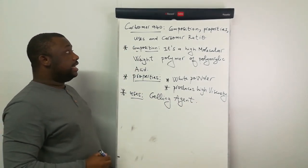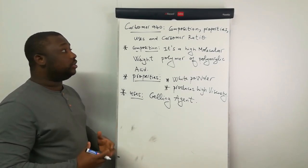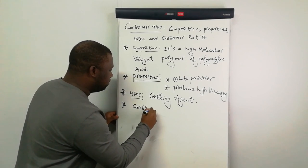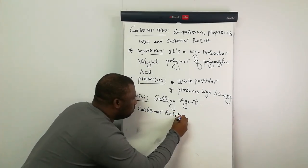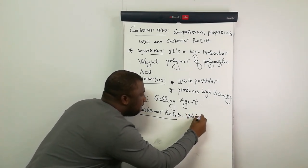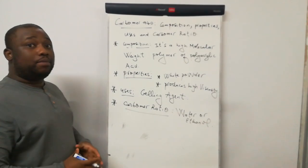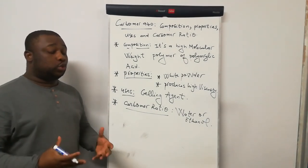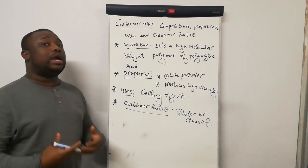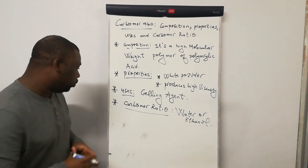Then the next point, I'll tell you about the Carbomer ratio. How much amount of Carbomer do you use into a mixture? Carbomer ratio in water or ethanol: how much Carbomer do you need to dissolve? You need to know that the amount of Carbomer should be 0.2%, 0.5%, even up to 1% of the total volume.